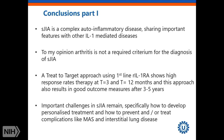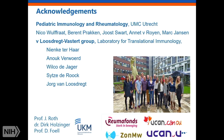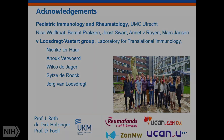In conclusion: systemic JIA is a complex auto-inflammatory disease sharing important features with other IL-1-mediated diseases. Arthritis is not a required criterion for the diagnosis of systemic JIA. The treat-to-target approach using first-line treatment with anakinra shows really high response rates in the first year, but also results in good outcome measures after three or five years of follow-up, with more than half of patients off therapy. Important challenges remain: specifically how to develop personalized treatment, and how to prevent complications such as macrophage activation syndrome and interstitial lung disease. With this, I would like to end and thank my team in Utrecht.